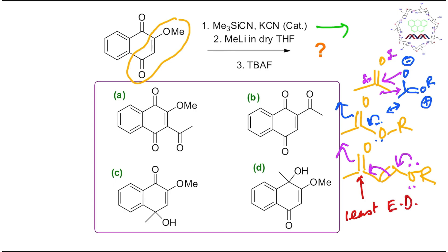Why is the vinylogous ester least electron deficient? Because the OR group has two effects: one is +R and another is −I. But because of the distance in the vinylogous ester, the OR group is far away, so the −I contribution is less. Therefore only +R works, which reduces the electron deficiency on the vinylogous ester carbonyl. So this carbonyl is less electron deficient compared to a simple carbonyl or an alpha-beta unsaturated carbonyl. This concept is essential.